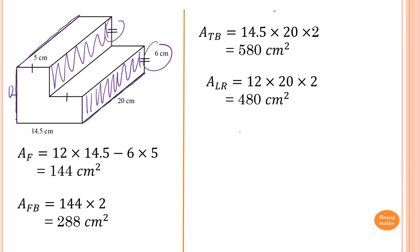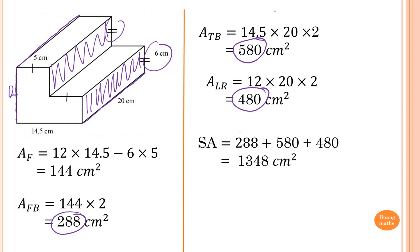Adding all areas — front and back, top and bottom, and left and right — the surface area equals 288 plus 580 plus 480, which gives 1,348 square centimeters. Thank you so much for watching.